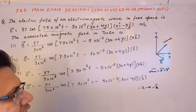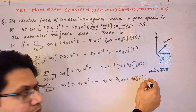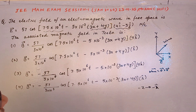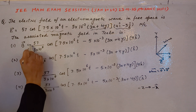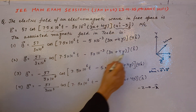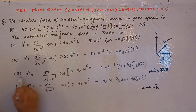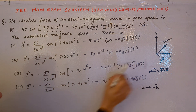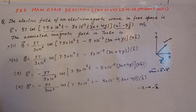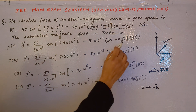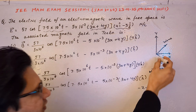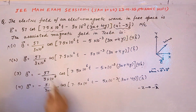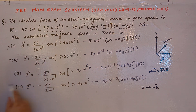So the direction of the magnetic field is minus k cap. Looking at the options: option one has plus 5k and option two has plus k — these cannot be correct since the magnetic field must be in the minus k direction. Options three and four have minus 5k and minus k respectively. So options one and two are eliminated; options three and four remain possible.